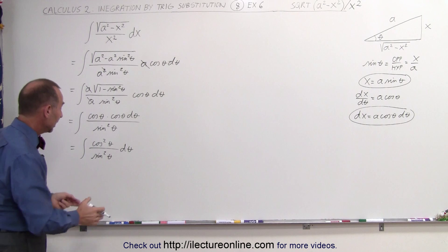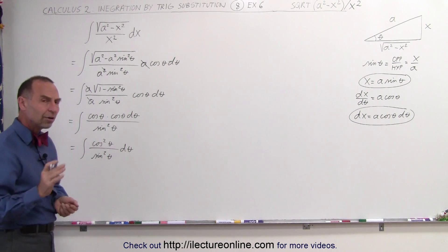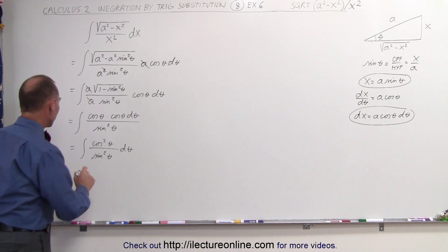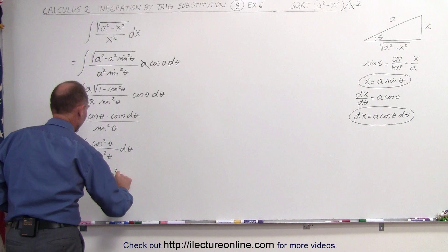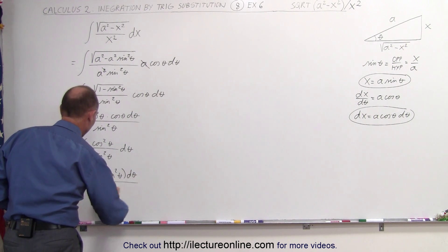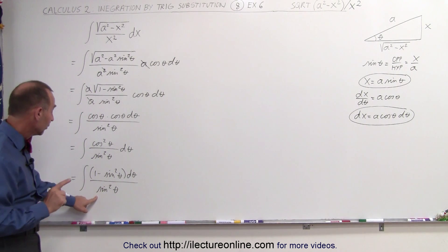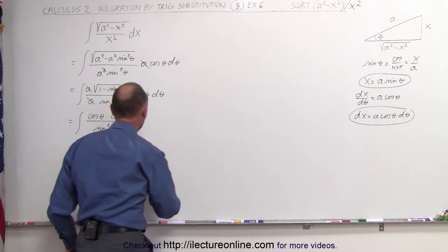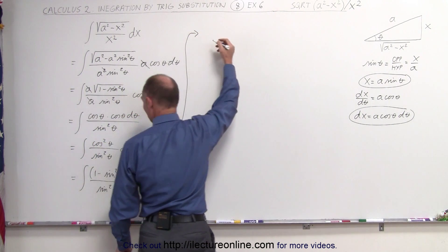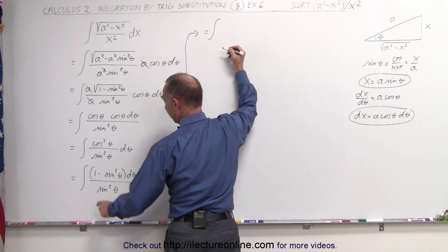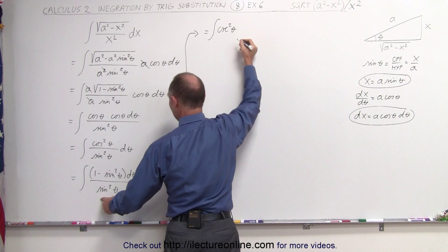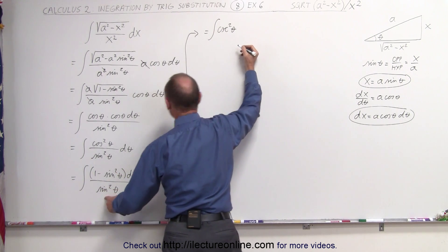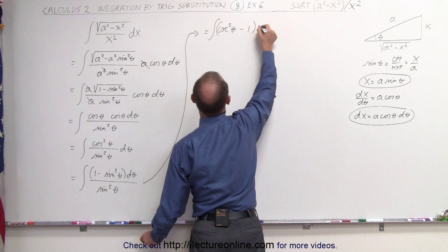Now it becomes an exercise in integrating this particular integral. The trick is to take the numerator and write it as follows: this is equal to the integral of 1 minus the sine squared of theta, times d theta, divided by the sine squared of theta. When we divide the denominator into the numerator, coming up here for more room, this becomes equal to the integral of 1 divided by the sine squared of theta, which is the cosecant squared of theta, minus the sine squared of theta divided by the sine squared of theta, which is simply 1, minus 1, times d theta.